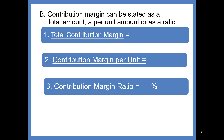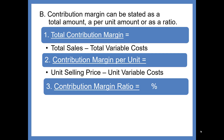The Total Contribution Margin is computed by taking Total Sales minus Total Variable Cost on the Income Statement. On a per unit basis, you start with the Unit Selling Price and subtract the Variable Cost per Unit.